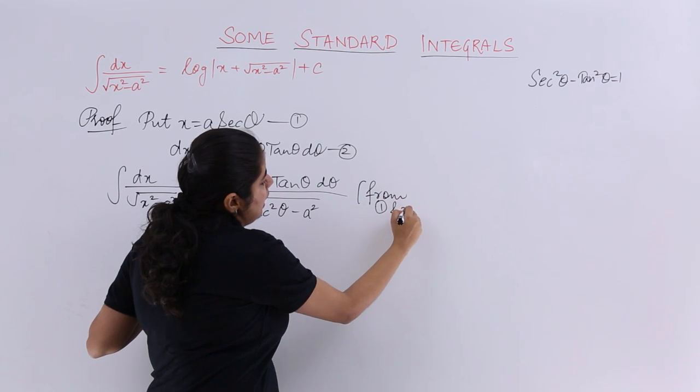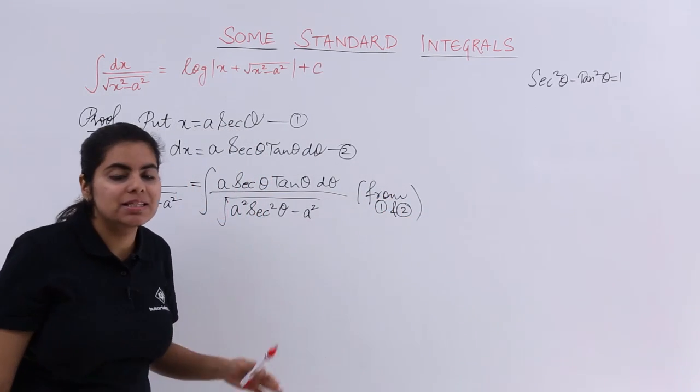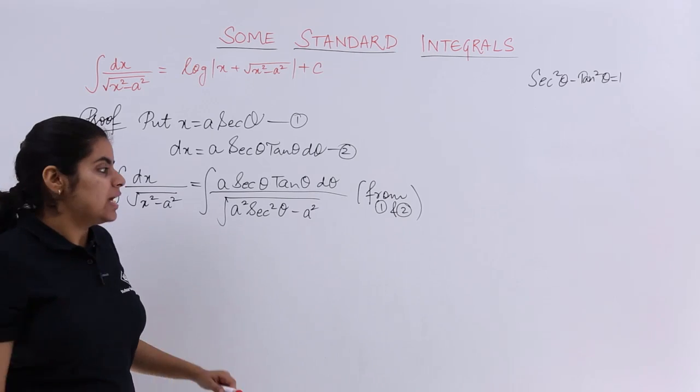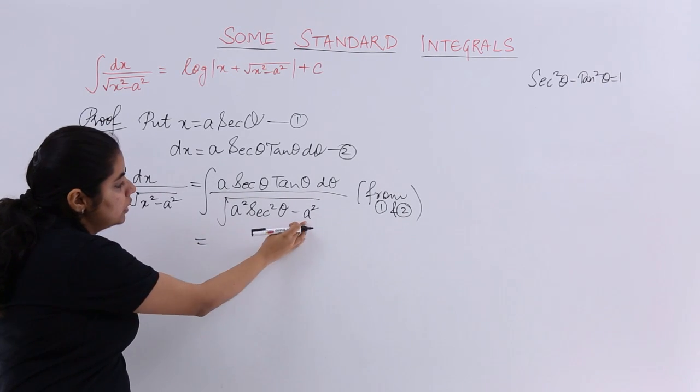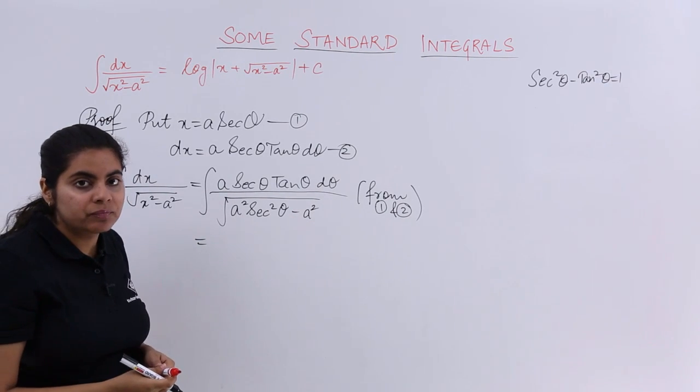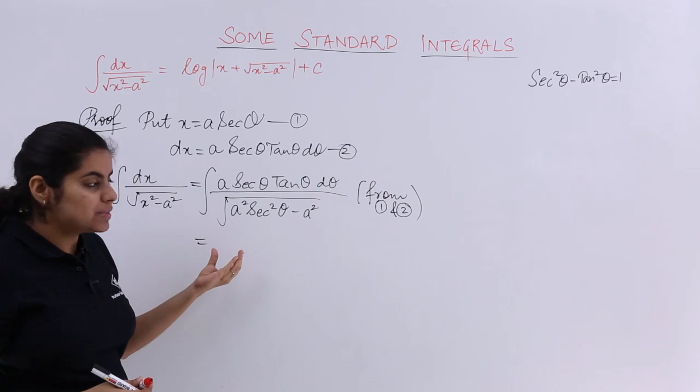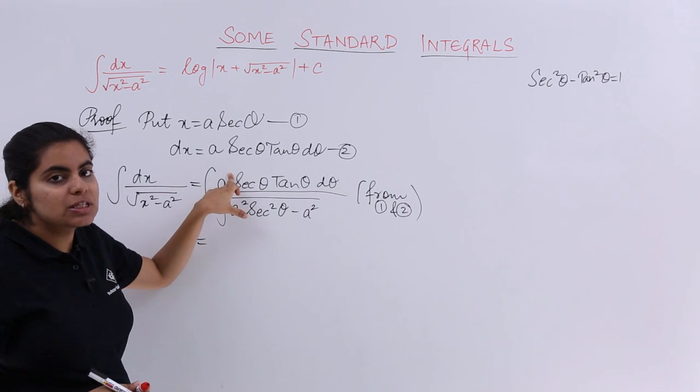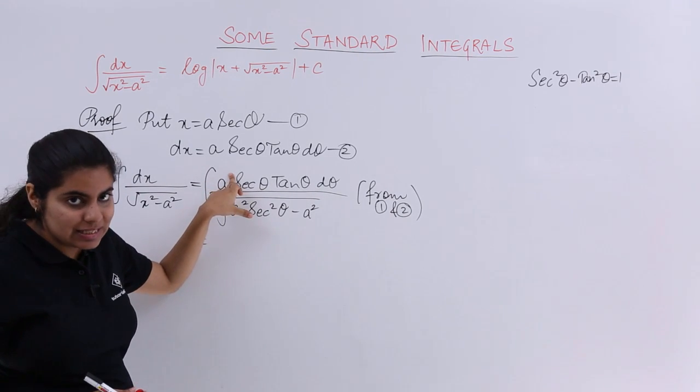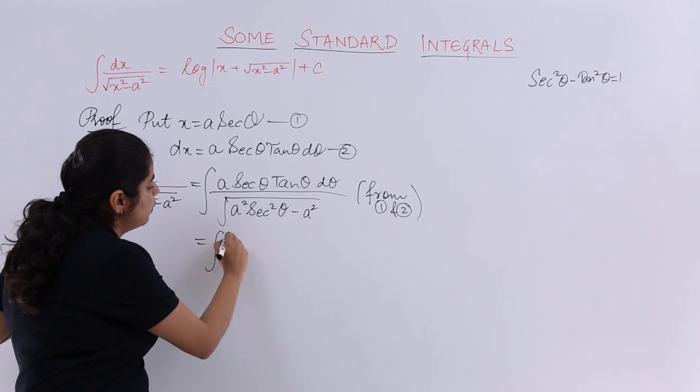Here I will be writing from 1 and 2 means I have used these equations and written everything. Now let's see, from here a square is common. Out of the root when it comes it becomes a, and in the numerator also is a, so a and a gets cancelled, okay? Then what do you have?